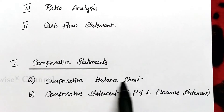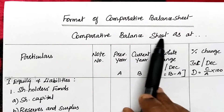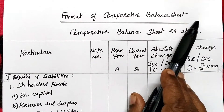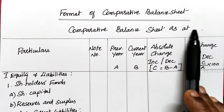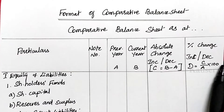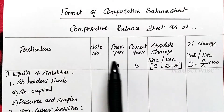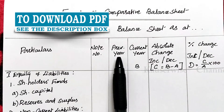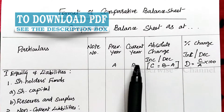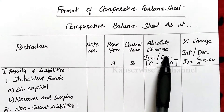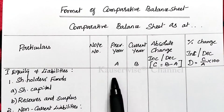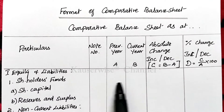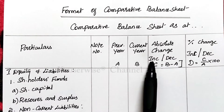The comparative balance sheet format covers two years. Here we have different columns: the first one is particulars, the next one is note number, then previous year data and current year data. First we need to enter previous year information, then current year information. The next column is absolute change, which means the difference between previous year and current year — it may be an increase or decrease.